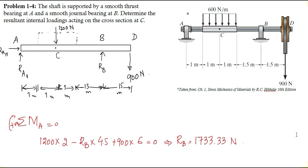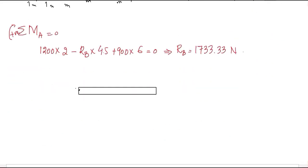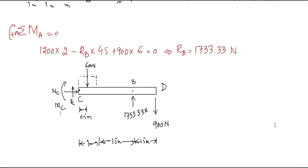Moving back to the actual question: we have to determine the internal loadings at point C, and I have taken the right portion of the shaft. Let's draw the free body diagram of the right portion. In this free body diagram there are three unknowns, which are the internal loadings acting at point C. These three unknowns can be determined by using all three conditions of equilibrium.